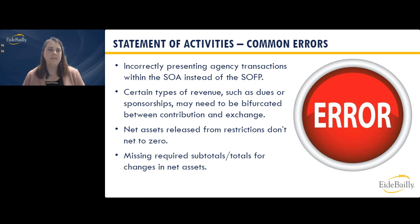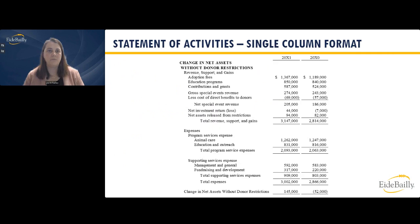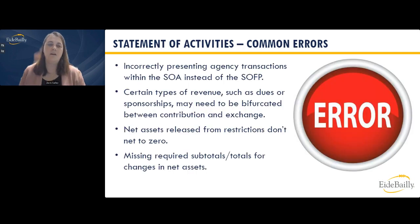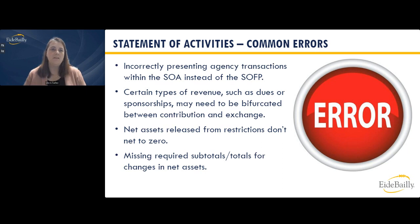Sometimes net assets released from restrictions don't net to zero — you'd normally see this in the single column format. On the two-column format, you can see the release from restriction go across both columns and it nets to zero, which is easy to spot. But in the separated format, an error — like a contribution listed incorrectly — can occur. Also watch for missing required subtotals or totals for the change in net assets, making sure those are separated between with and without donor restrictions.